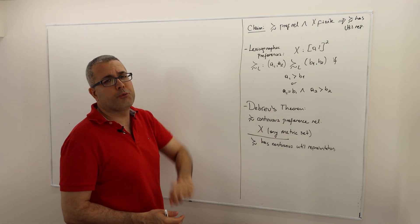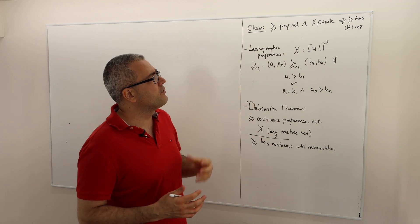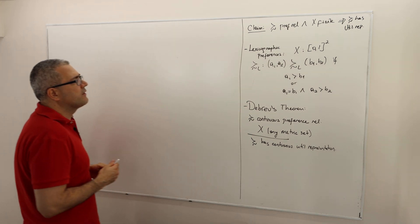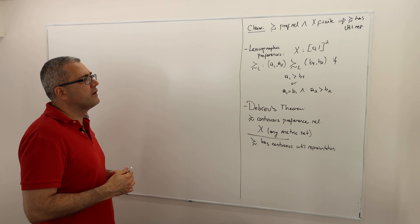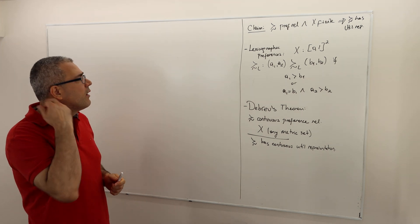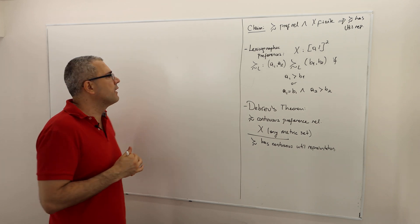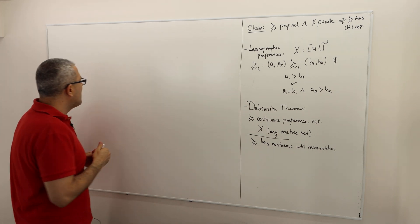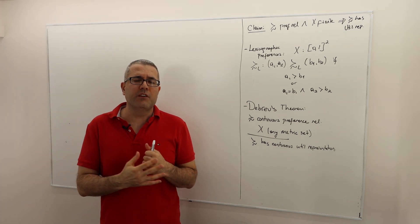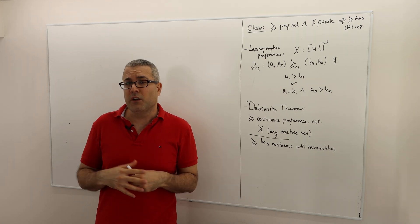So let's start proving this argument. I have a preference relation — a binary relation with complete, transitive, and reflexive properties — and X is a finite set. How can I create this utility function? It's very similar to the way we created a utility function for the three-alternative example.